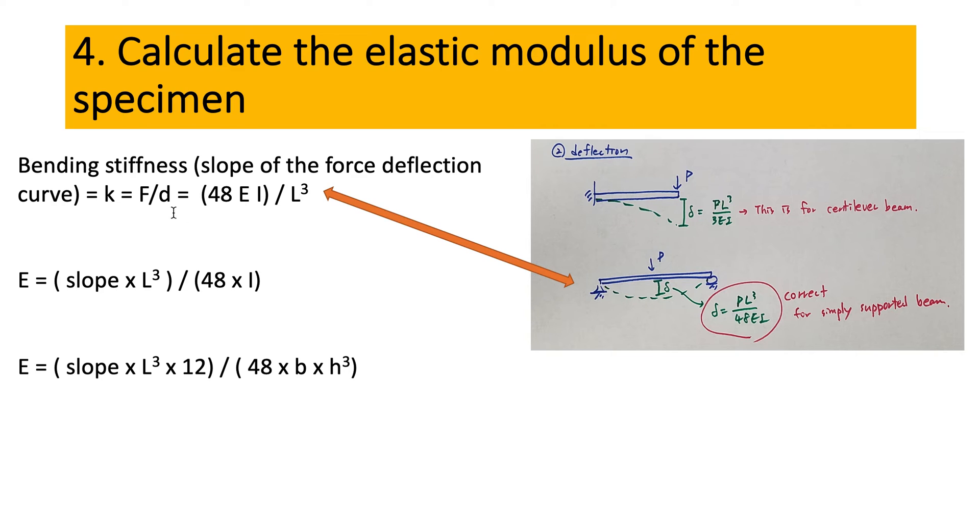So I can rearrange this formula to get E. So E is going to be the slope multiplied by L cubed divided by 48 multiplied by the moment of inertia. So this is rearranging this formula, assuming that the slope is given. This side is given from this analysis.